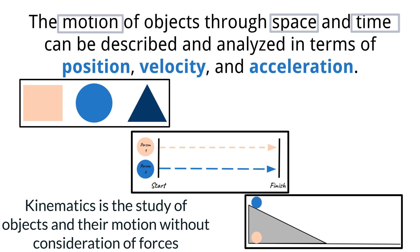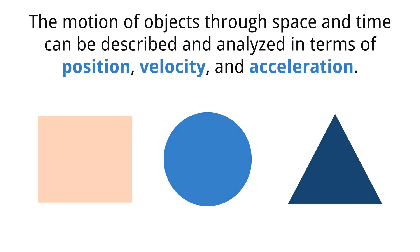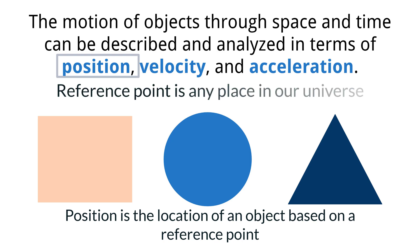To begin our understanding of kinematics, we must start with three important values of motion. When describing and analyzing motion, the first important value to understand is position. Position is the location of an object based on a reference point. To determine the position of an object, there must first be an agreed upon reference point. A reference point can be any place in our universe, and we often use reference points when we give directions without even thinking about it.